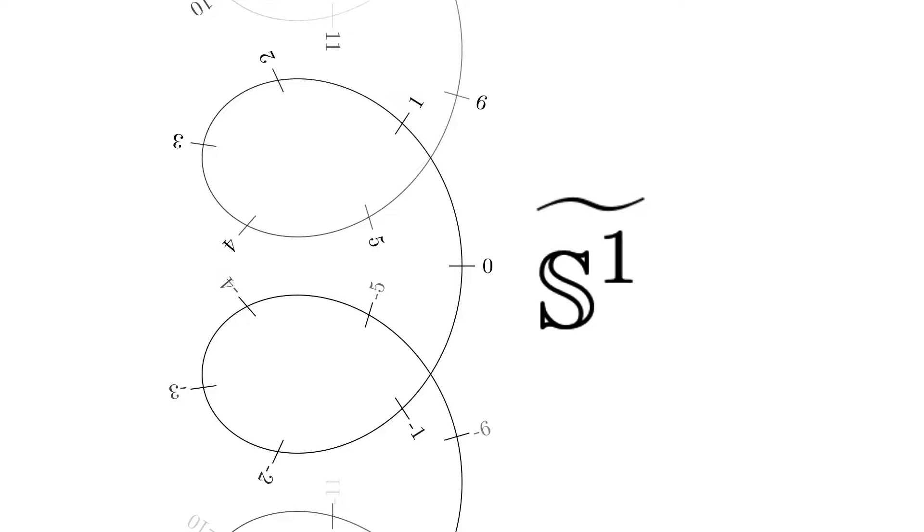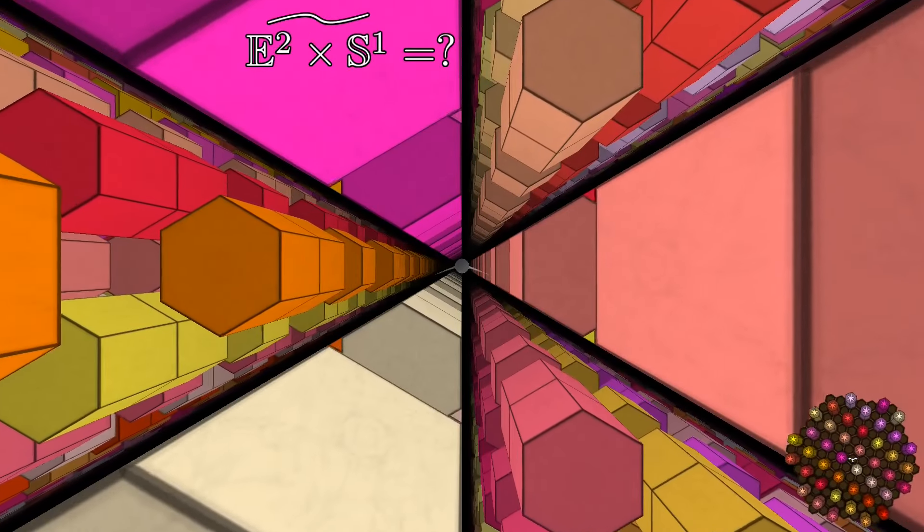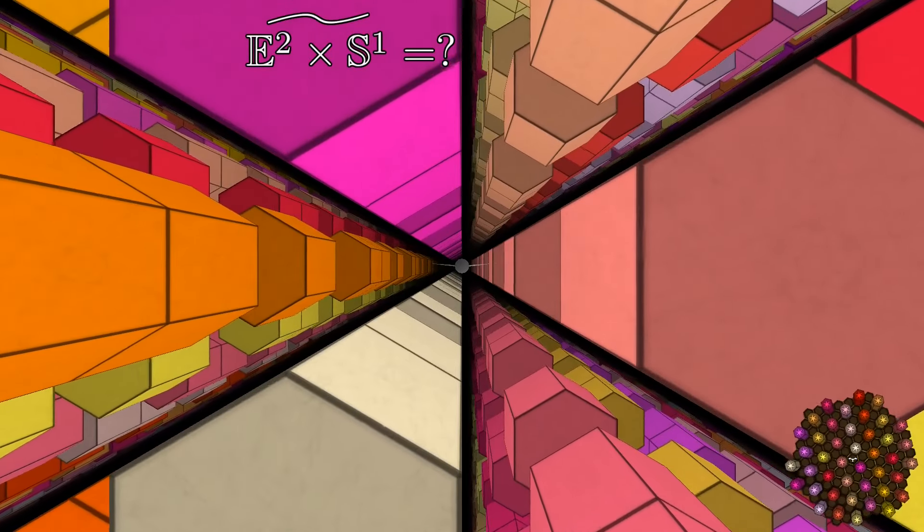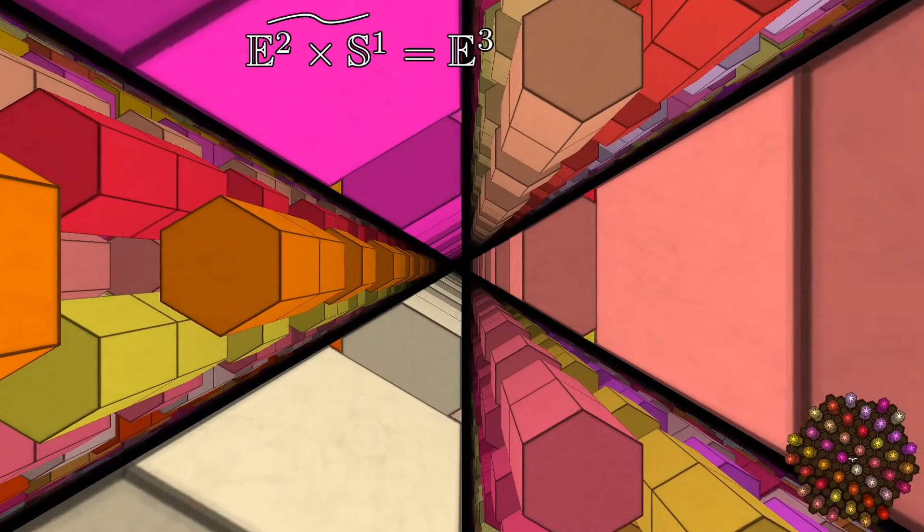Let us see some examples. We denote the universal cover by this tilde. The motion space of E² is E³ with points identified when we move 2pi in the phi direction. Its universal cover is simply E³. Note that in this universal cover, moving by 2pi or 4pi or 6pi and so on in the phi direction, brings you to different places.